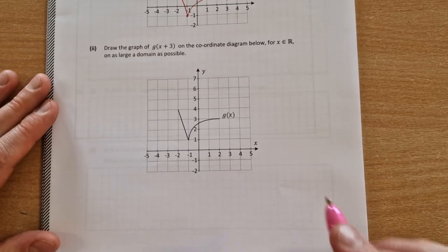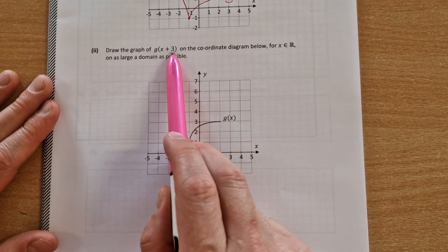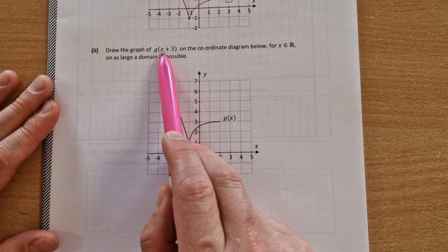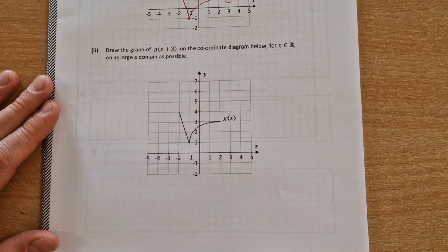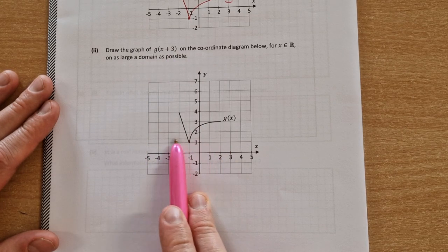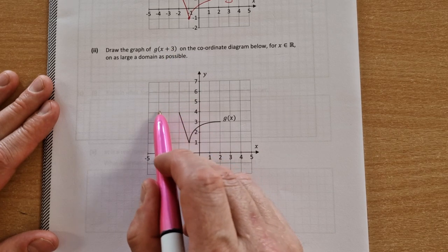The next one, same function, but we're asked to draw g of x plus 3. The difference is when you add 3 to your input, you're adding 3 to every single input, the transformation that occurs now is it moves to the left by 3 units. So that will move 1, 2, 3.